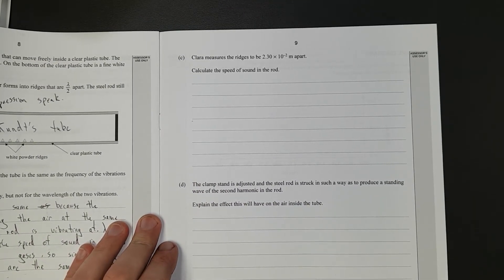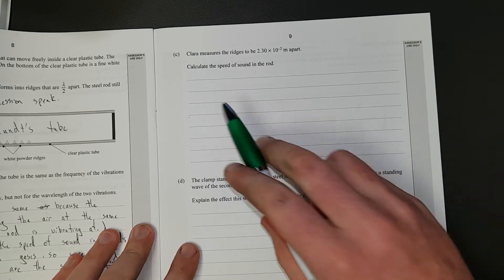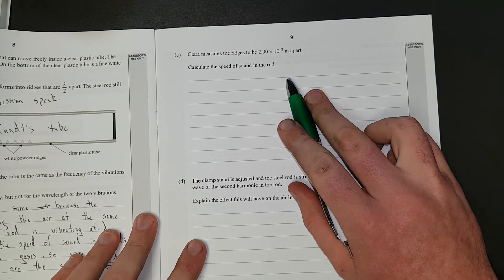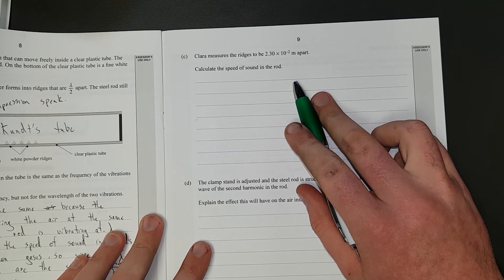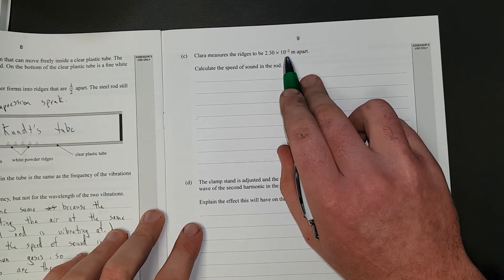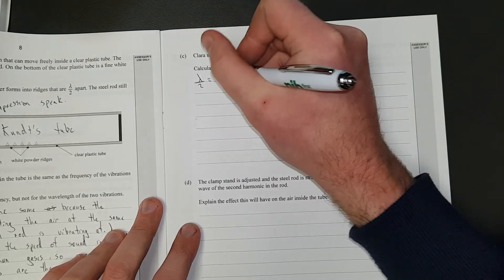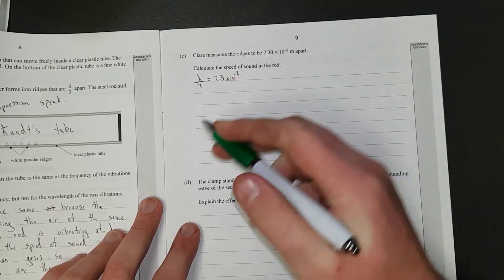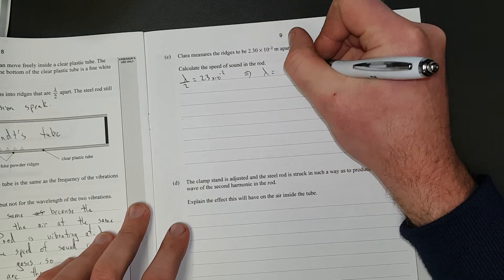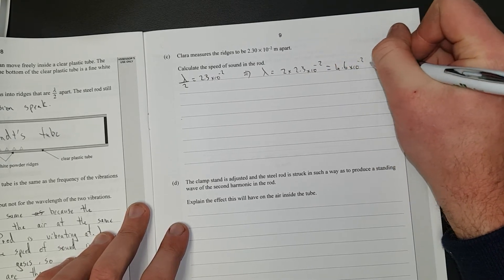Clara measures the ridges to be 2.3 times 10 to the negative 2. So, what is that? 2.3 centimeters? Calculate the speed of sound in the rod. Right. So, what are we going to do? Ridges are that far apart. Lambda over 2 is equal to 2.3 times 10 to the negative 2, because they're that far apart. In other words, lambda is equal to 2 times 2.3 times 10 to the negative 2, which gives me 4.6 times 10 to the negative 2 meters. Boom! We got achieved.